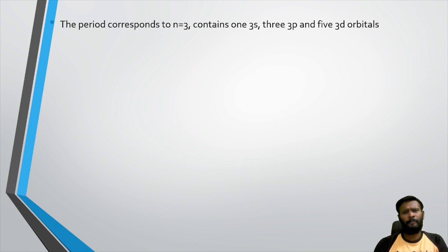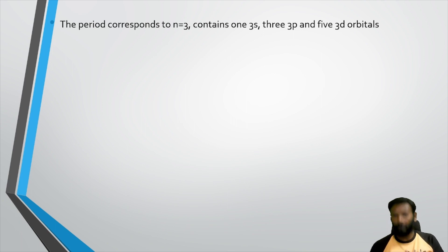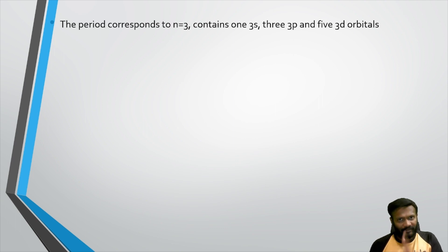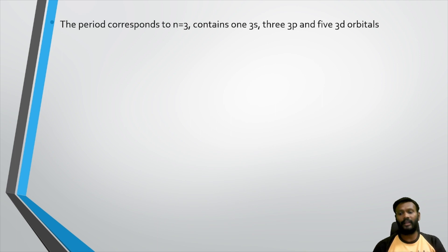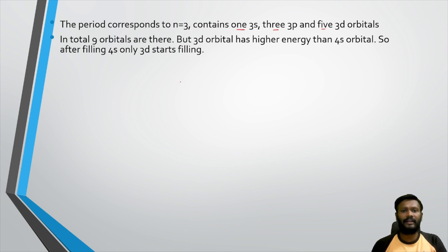The third period corresponds to n equal to 3. It contains one 3s orbital, three 3p orbitals, and five 3d orbitals. To summarize: s orbital has 1, p orbital has 3, d orbital has 5, and f orbital has 7 sub-orbitals. So in total, the third shell has 9 orbitals (1 + 3 + 5).